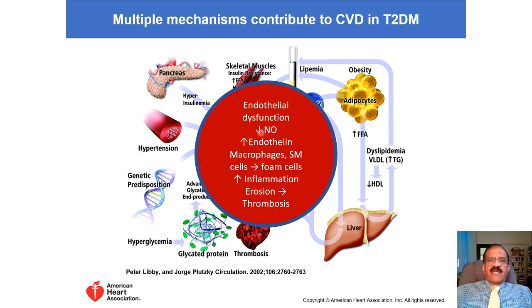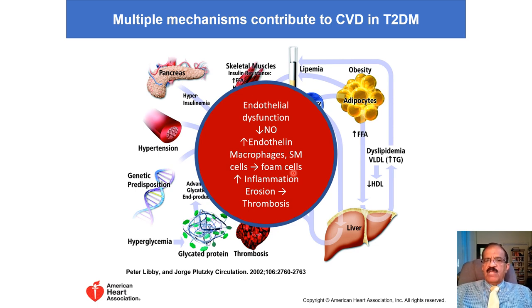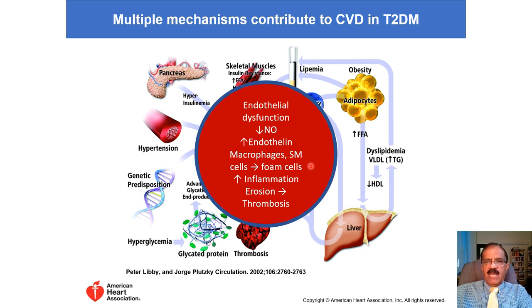All these factors cause endothelial dysfunction — they reduce nitric oxide (a vasodilator) and increase endothelin (a vasoconstrictor). They also stimulate macrophages and smooth muscle cells to become foam cells, which are fat-filled cells that are precursors to the atherosclerotic process. Increased inflammation, indicated by raised CRP and TNF-alpha, is responsible for plaque erosion and thrombus formation. This is how all these mechanisms interact to produce atherosclerosis.